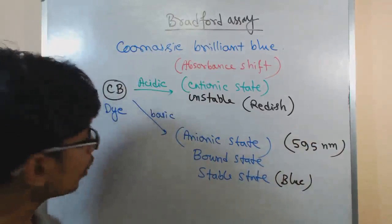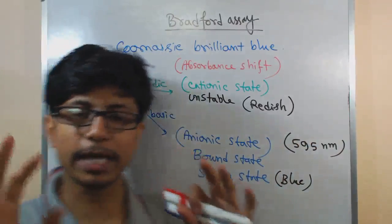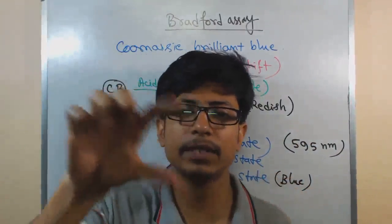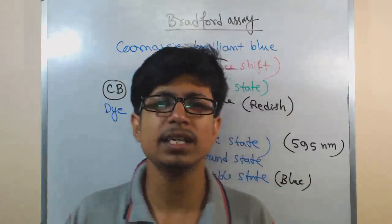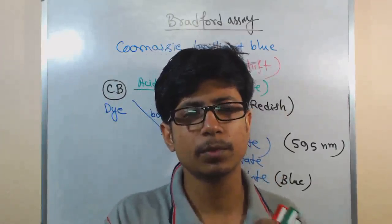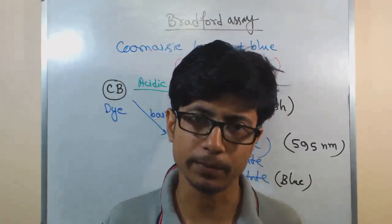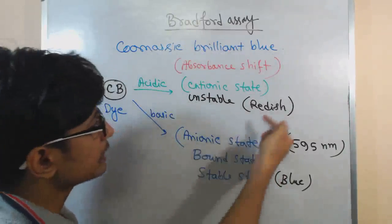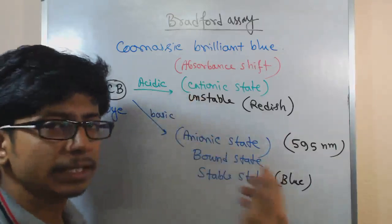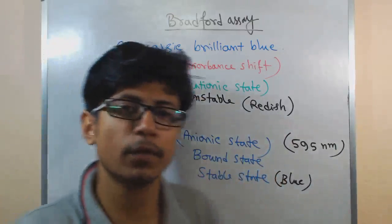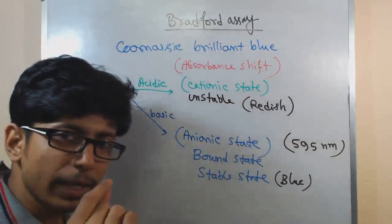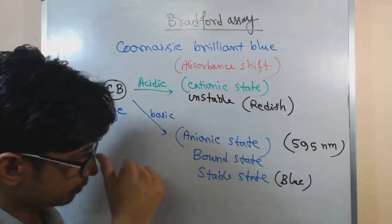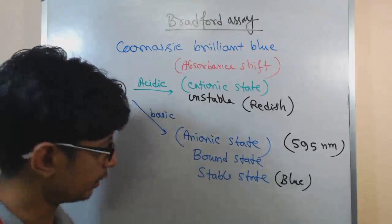So the idea is normally we take this Coomassie brilliant blue dye and we have, let's say, we have the concentration of proteins in different test tubes. Let's say it is a sample test and we use protein called BSA, bovine serum albumin. Once we use that and we start adding this acidic content, I mean the Coomassie blue in the acidic form, it gives us the coloration of brownish. And then, once we add them to the protein, it slowly starts to change the color.